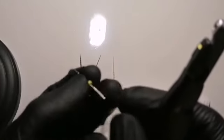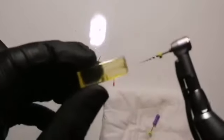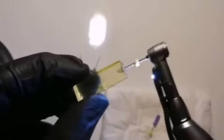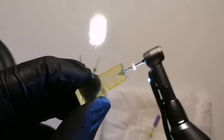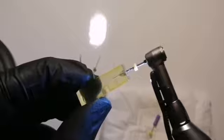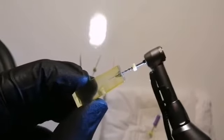Then I will place an SX or orifice opener file, which is a 17 taper 8, at 350 revolutions per minute and 2.6 as the torque. Using brushing motion to pre-flare or to remove any dental shoulder inside the canal.